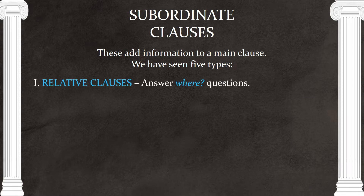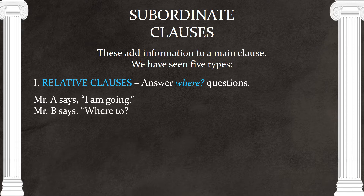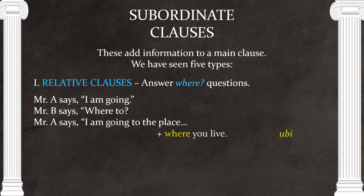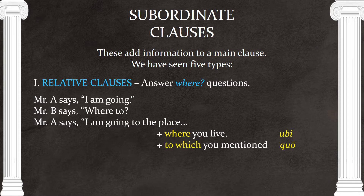First, we have relative clauses, which can answer 'where' questions. For example: 'I'm going to the place where you live,' shown with 'ubi'; 'I'm going to the place to which you mentioned,' shown with 'quo'; and 'I'm going to the place from which you came,' shown with 'unde.' These Latin words ubi, quo, and unde introduce a relative clause that gives us more information. The main clause is 'I am going' or 'I'm going to the place,' and the subordinate clause gives us more information.